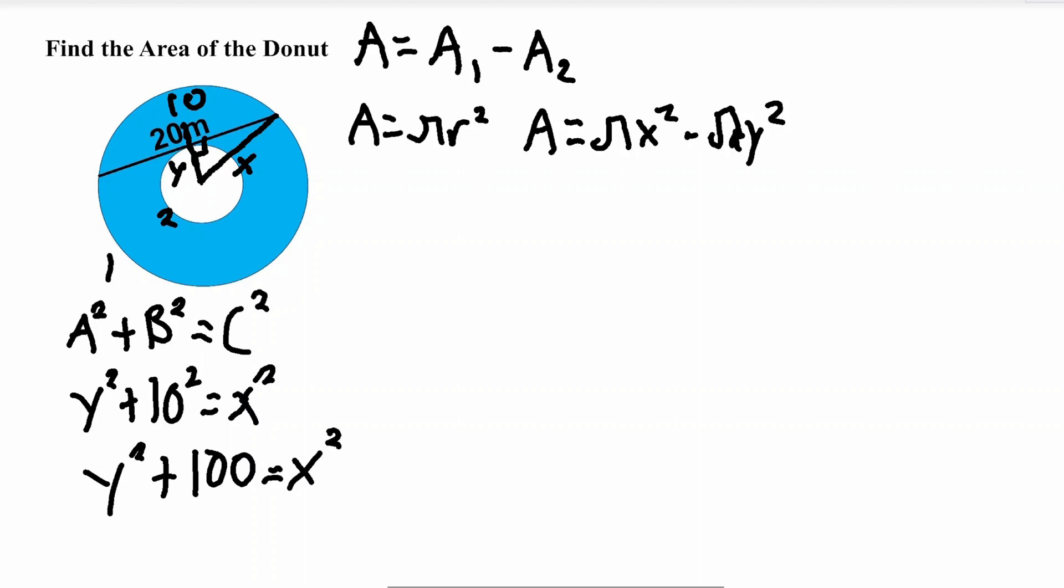Now let's go back to this equation here and we can still simplify this more if we factor out the pi. So let's factor out the pi here which gives us A is equal to pi times x squared minus y squared.